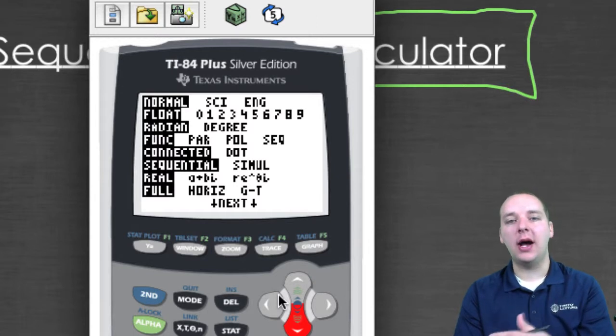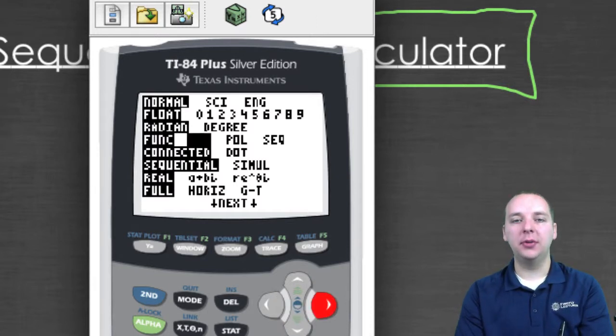There's another mode called parametric mode, which we're not going to talk about. There's another mode called polar mode, which we're not going to talk about. And then the last one is the one we're going to use, s-e-q, sequence mode. So if you change that, if you push enter, there's sequence mode.